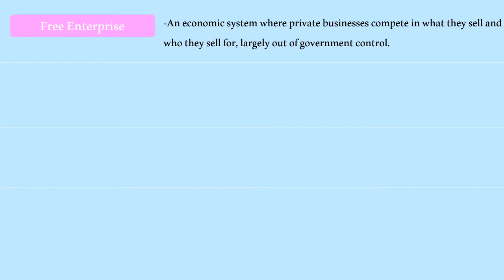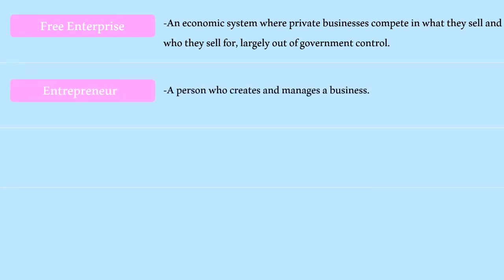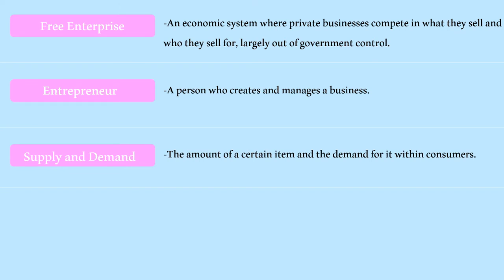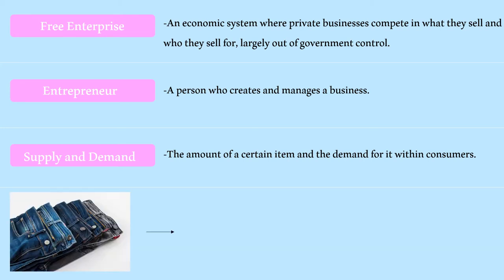A market economy could also be described as a free enterprise system. In this system, everyday citizens become entrepreneurs as they create private businesses in which the government has absolutely no say in what these businesses produce and how they regulate the production and employees. It's all up to the entrepreneurs and consumers. The things a business produces are also up to supply and demand — a system in which the supply of a certain item is determined by the desire for it. For example, this business is selling high quality jeans for a low price because they have boxes full of them in the storage room.